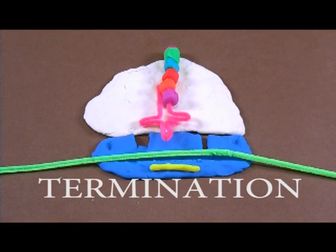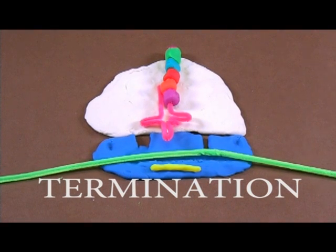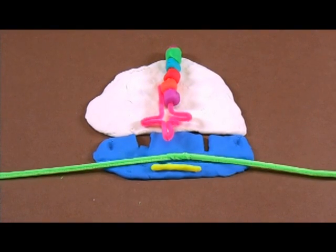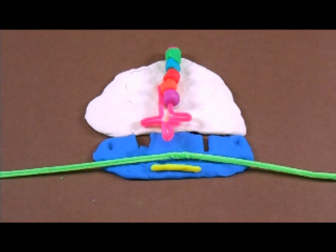Termination. A stop codon is a nonsense codon that does not have a corresponding tRNA. There are three of them: UAA, UAG, and UGA.